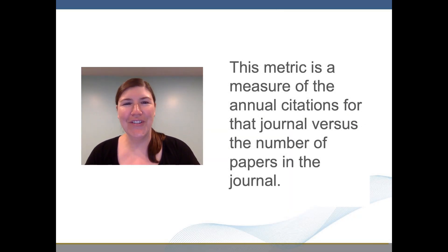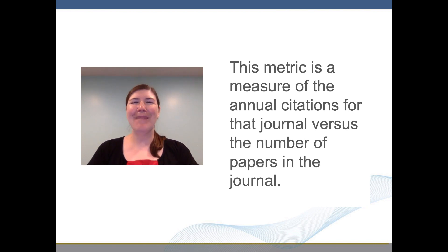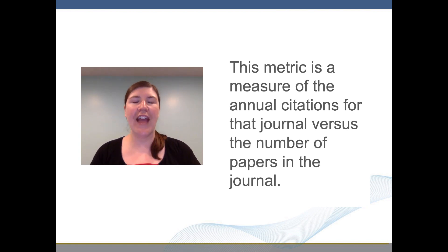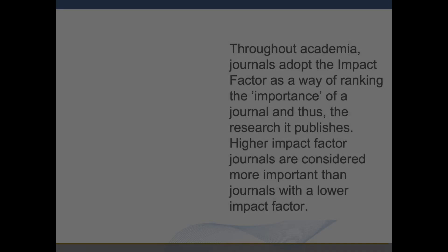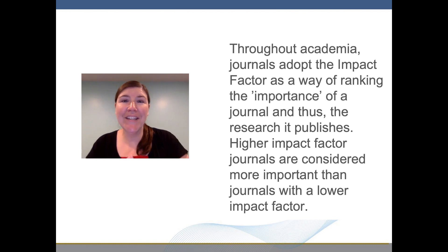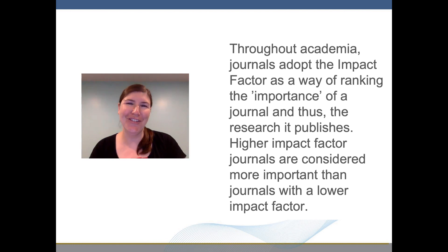Academic journals are ranked according to a metric called the Impact Factor. This metric is a measure of the annual citations for that journal versus the number of papers in the journal. Throughout academia, journals adopt the Impact Factor as a way of ranking the importance of a journal,